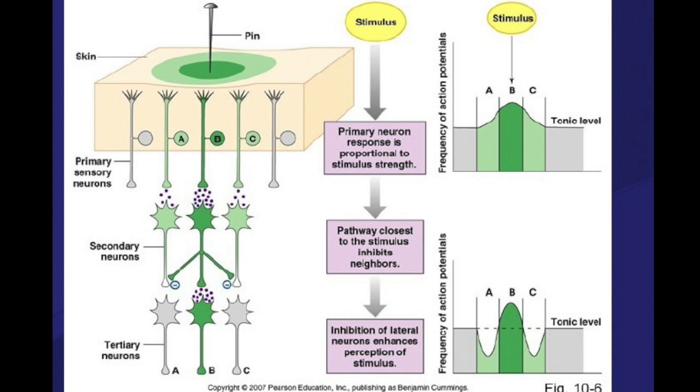We see there are three neurons: A neuron, B neuron, and C neuron, which are getting involved here and stimulated. But the center one, B neuron, is getting much stronger stimulation than others.